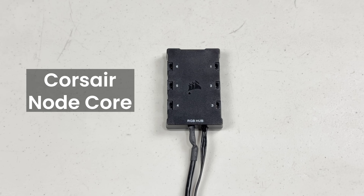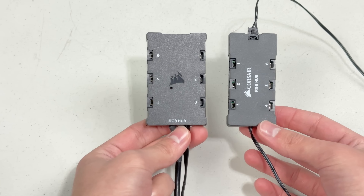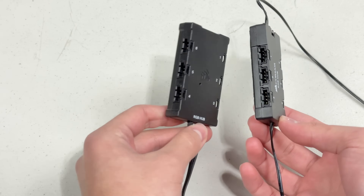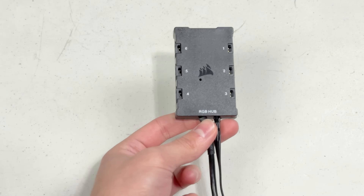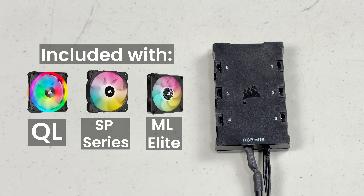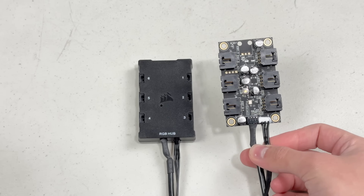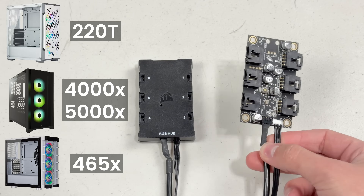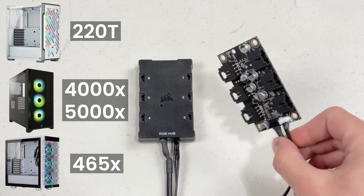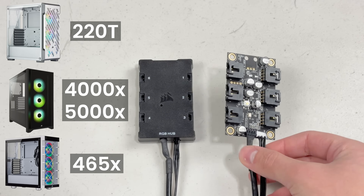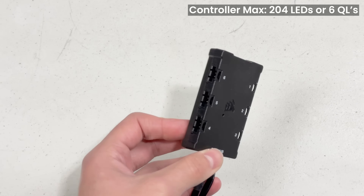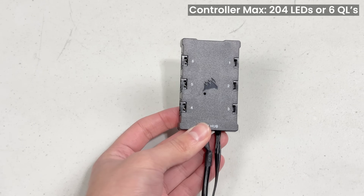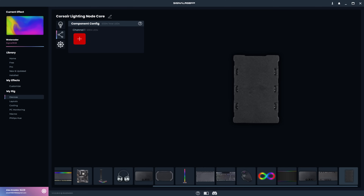The Node Core is kind of like the Corsair RGB Fan LED Hub because it has 6 4-pin RGB ports, but instead of connecting into another controller, it connects directly to internal USB 2.0. It's included when you purchase QL fans, any of the SP Series fans, or ML Elite fans. You'll also find this controller without the plastic housing inside the 220T, 4000X, 5000X, and 465X cases. It supports up to 204 LEDs across the 6 ports. In SignalRGB, you'll see one channel for the 6 RGB fan ports.